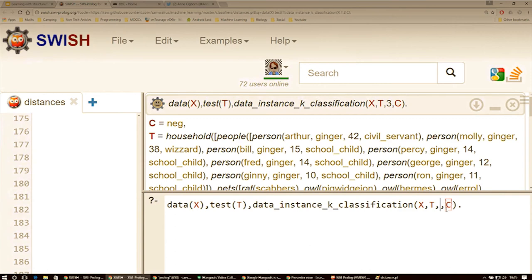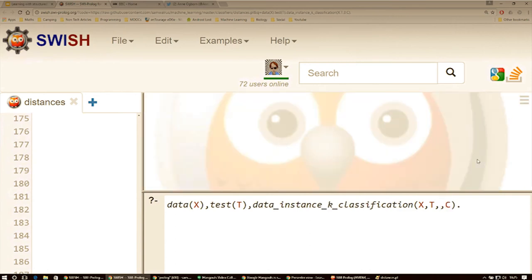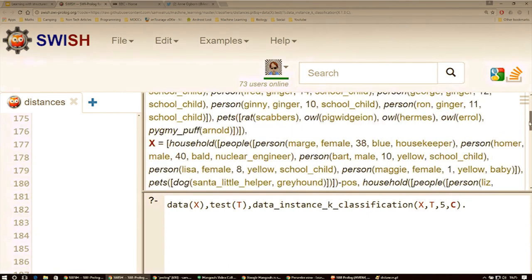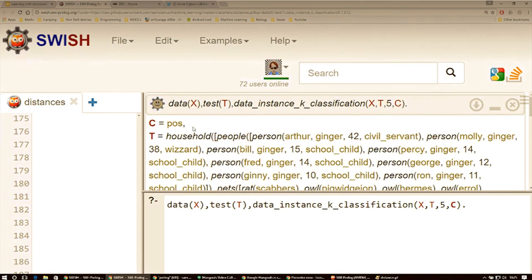Now we could also change that and see what would happen if we had k is five. Would that change our result? And in this case, it does. Now they're cast as a positive family, whatever you want positive or negative to mean.